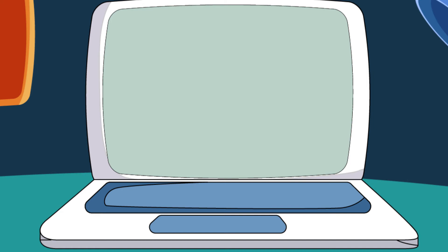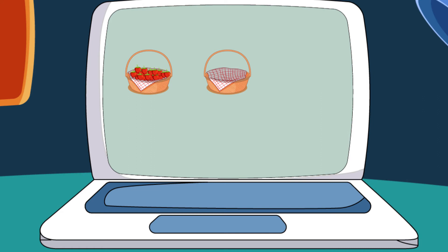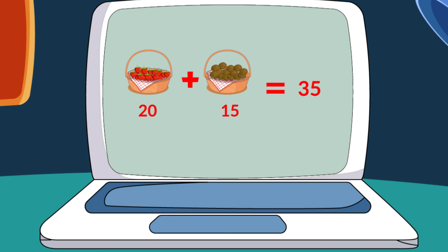Here kids, we see there are two baskets. One basket has twenty strawberries and another basket has fifteen chickoos. Now we will count the above fruits together — let us do addition. Twenty strawberries plus fifteen chickoos, all together, gives thirty-five fruits. Yes!